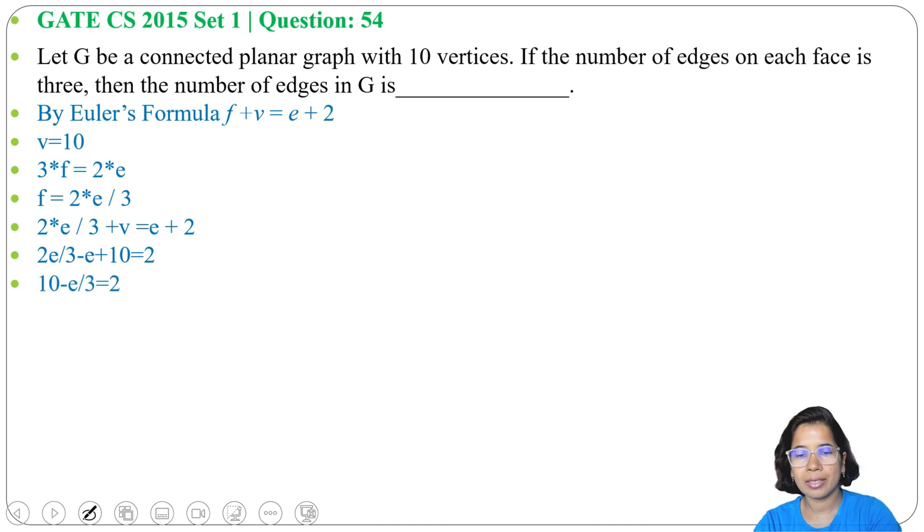Take this E divided by 3 to the right side. So 10 minus 2 will be 8, equals E divided by 3. Therefore E equals 24. Answer will be 24.